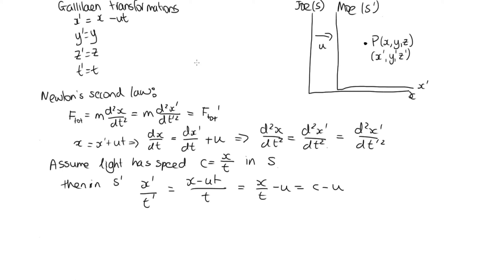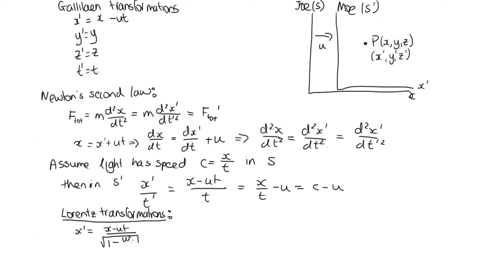Lorentz came up with some transformations which allow for this constant speed of light. The Lorentz transformations can be written as: x dash equals (x minus ut) over the square root of 1 minus u²/c², which is sometimes written as gamma times (x minus ut), where gamma equals 1 over the square root of 1 minus u²/c².